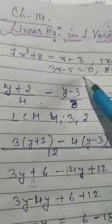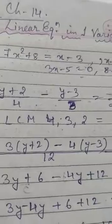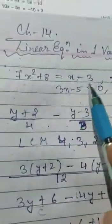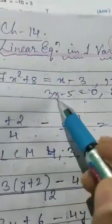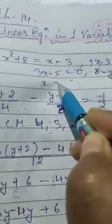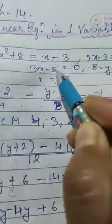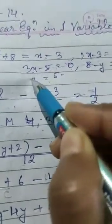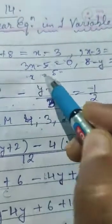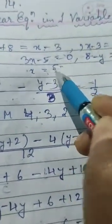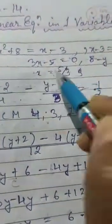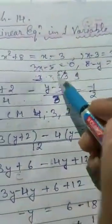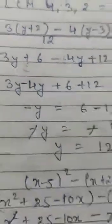A linear equation has only one solution, which is called its root. When you solve it, you get only one solution. For example, finding the value of x in 3x - 5 = 0: the -5 goes to the other side as +5, and the 3 moves to division, giving x = 5/3. That is the answer — only one solution, which is called the root.